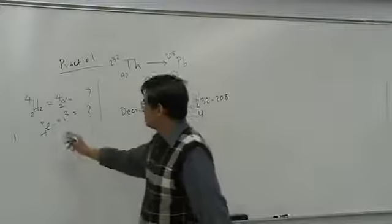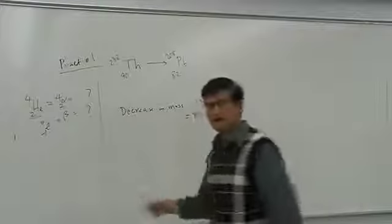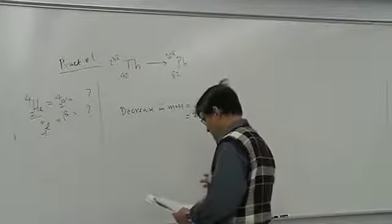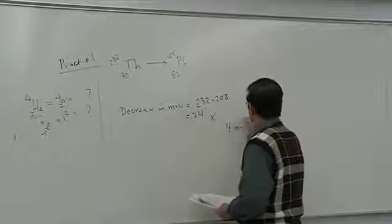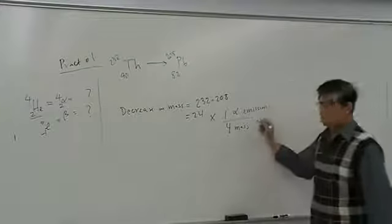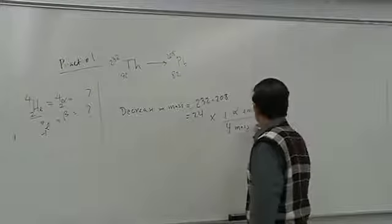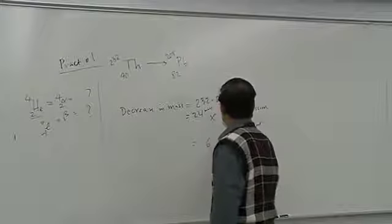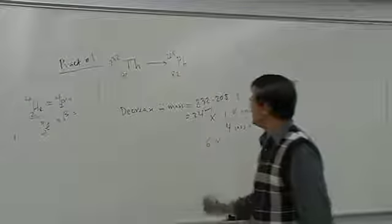Mass cannot be changed by beta particles because they carry negligible mass. Each alpha particle carries a mass of 4, so the number of alphas is 24 divided by 4 per alpha emission, giving 6 alpha particles. When 6 alpha particles come out, mass decreases by 24 units, accounting for the total change.